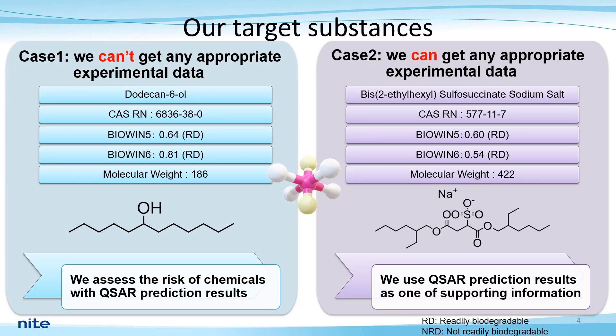As our target substances, we picked up these two chemicals. As case one, we chose the chemical indicated on the left side. When we can't get any appropriate experimental data, we use QAF prediction results as one of supporting information.